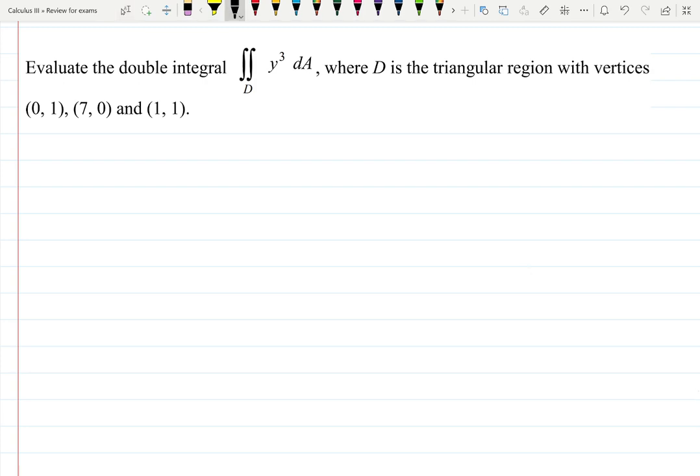This will be an interesting video because we will review how to create equations of lines through points. They ask us to evaluate a double integral of y³, which is like z equals y³, a surface floating in space. D is a triangular region bounded by three lines which we'll need to find using those three vertices.